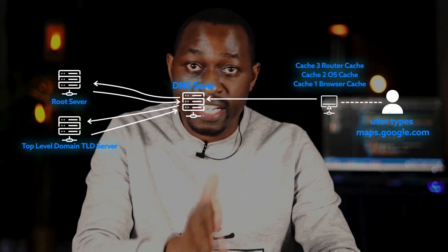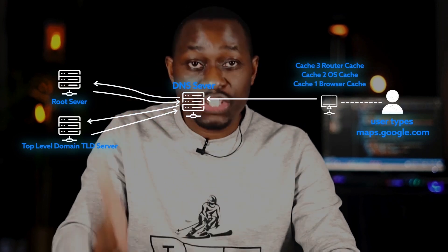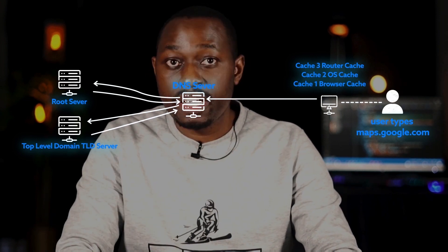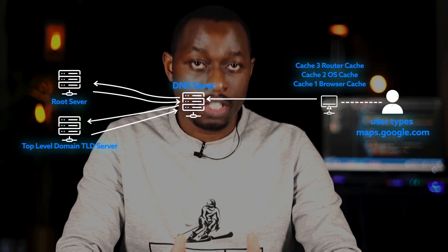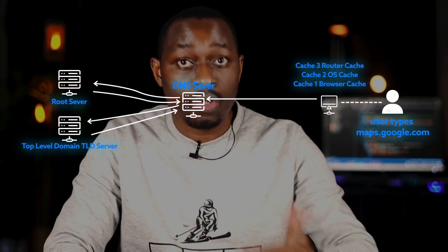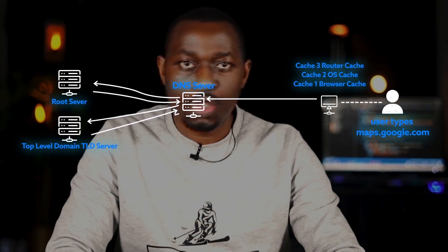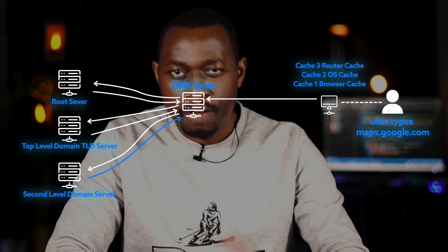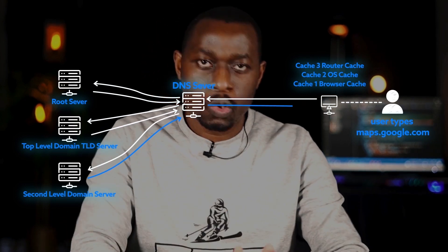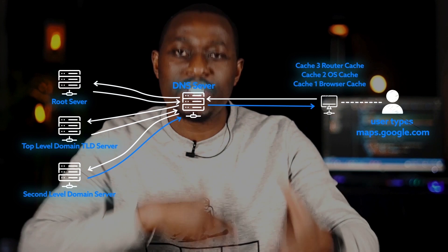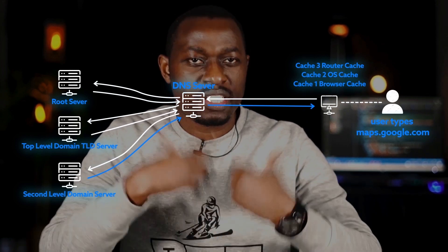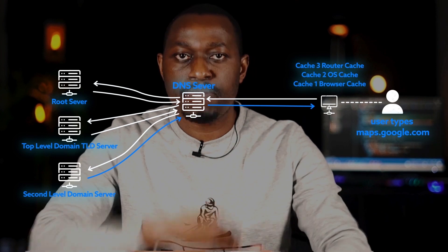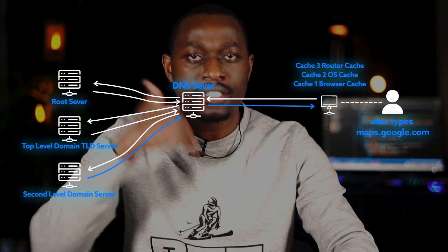The top-level domain name server maintains information for all domain names that share common domain extensions such as .com, .org, .net, etc. — whatever comes after the last dot. In our example, it's .com, so that's the TLD. The top-level domain then retains the IP address of the second-level domain server. The second-level domain is the part of the domain name located right before the top-level domain — for example, in google.com, the second-level domain is 'google.' The second-level domain server contains the DNS record of the server we are looking for and returns the IP address to the browser. To make the whole process time-optimized, caches are created at each step with a time-to-live value.